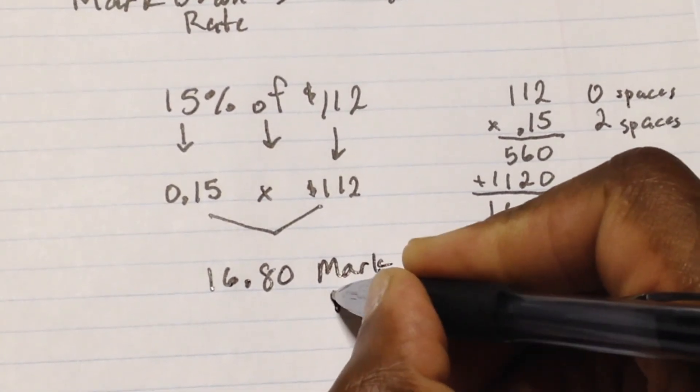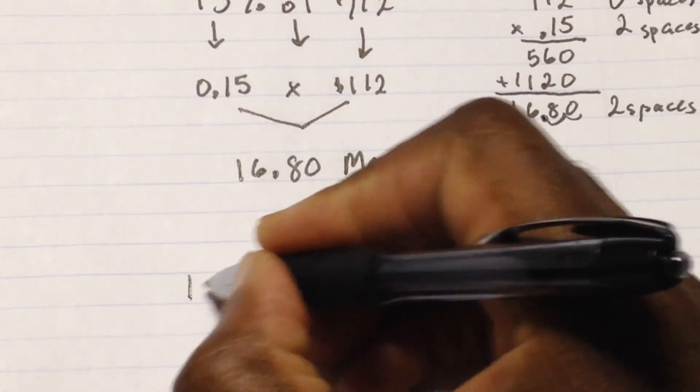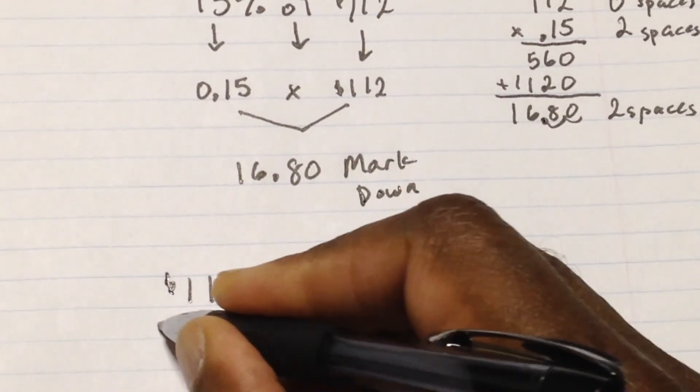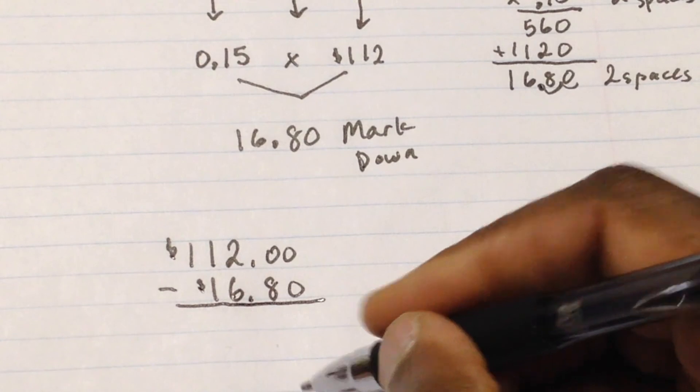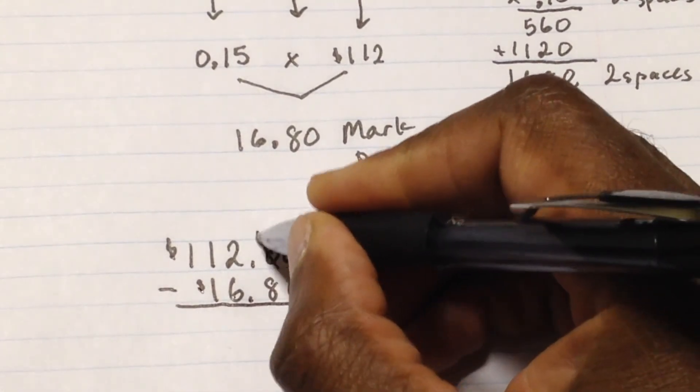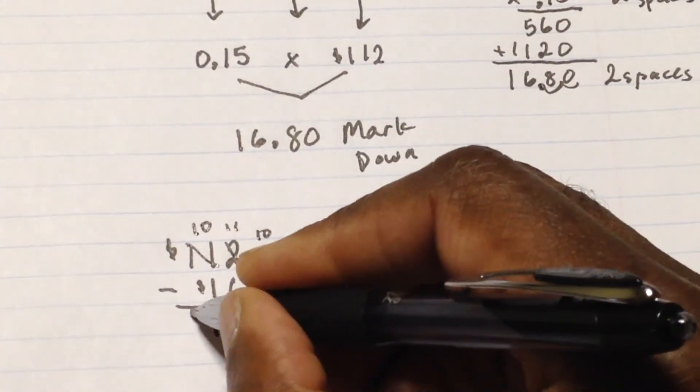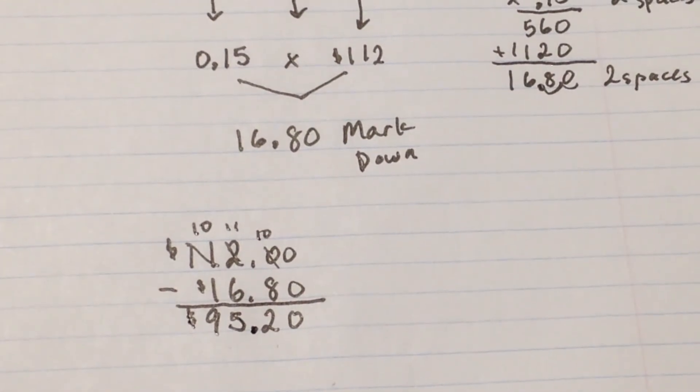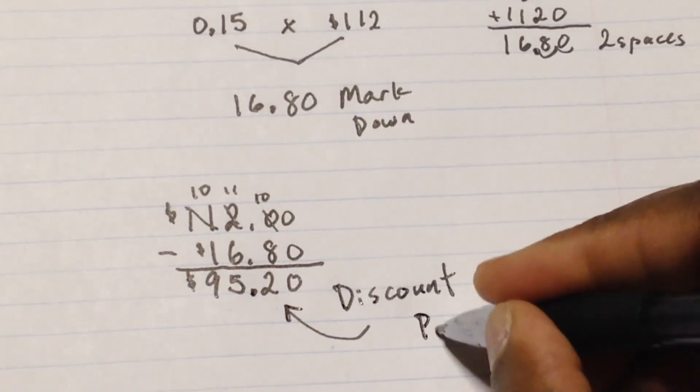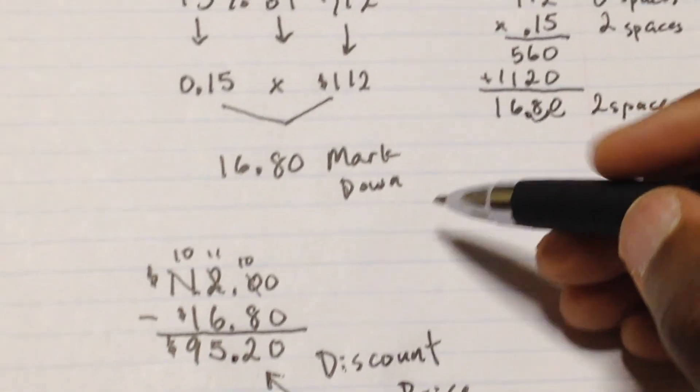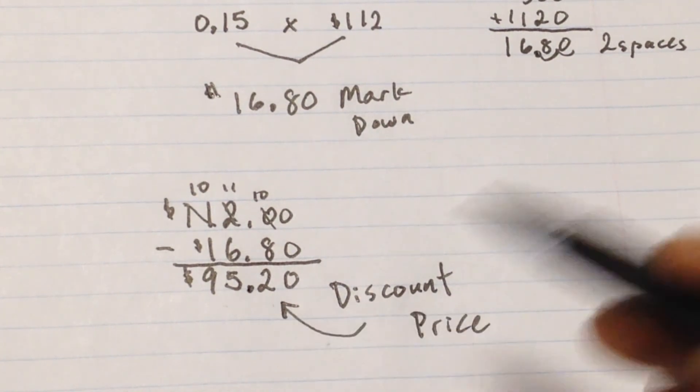So now with that markdown, I'm going to subtract it from the selling price. The price was $112. And I'm taking away $16.80. And so when I finish, I do the subtraction. That becomes 10, that becomes 11. This will be 2. This is 5. This will now become 10. So I have $95.20. This will now become our discount for the customers. So that's our discount price today. So again, we now found the markdown. The markdown was $16.80. And when I subtract it from the price that we were selling it for, it comes out to $95.20.